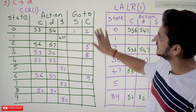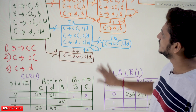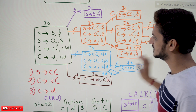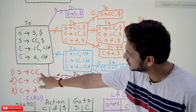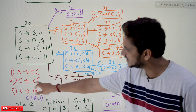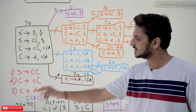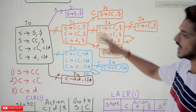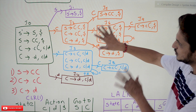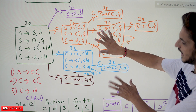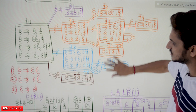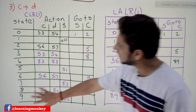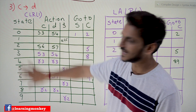These are the items that we have generated for the example. S tends to CC; C tends to small c capital C; C tends to d. For this grammar, these are the items generated. Using these items we have constructed a CLR(1) table. How many states do we have here? Total 10 states are there.